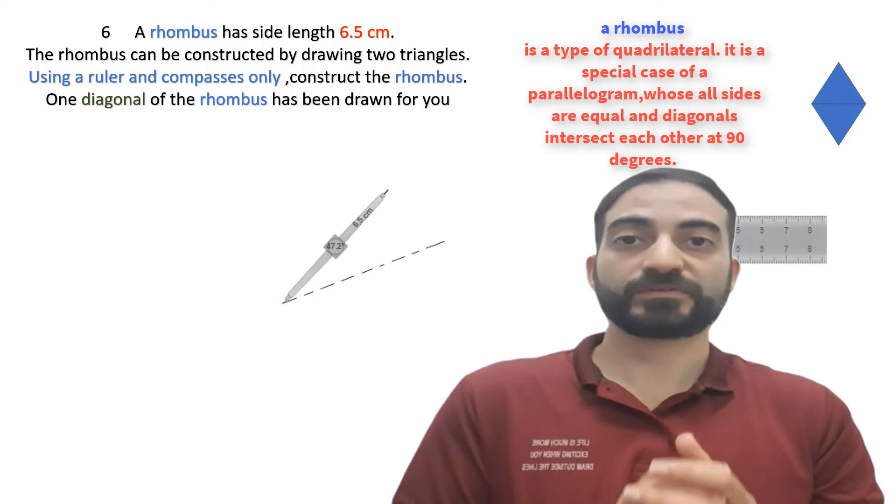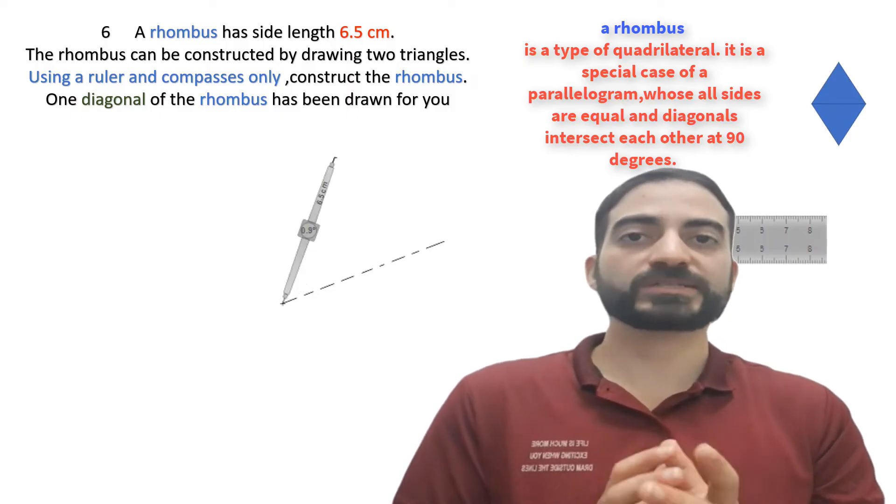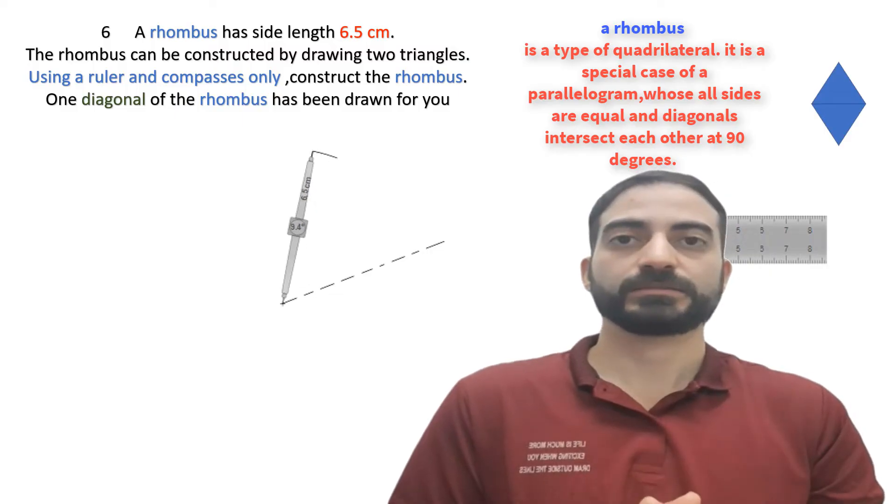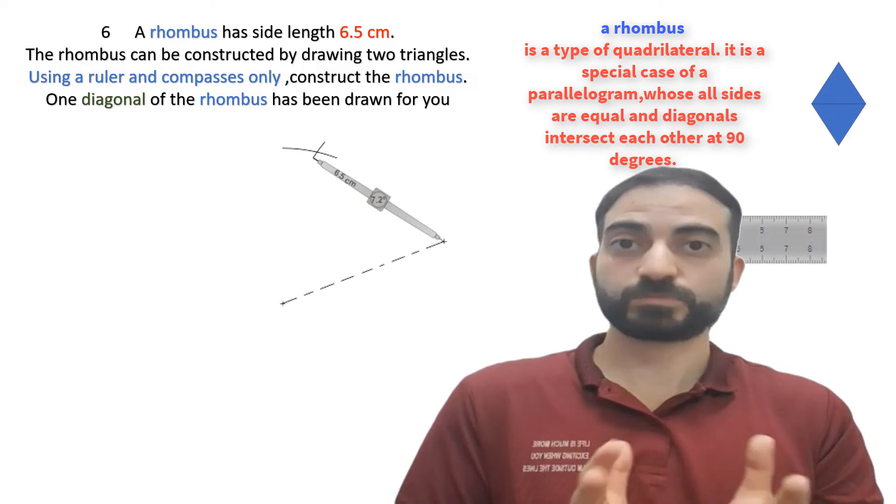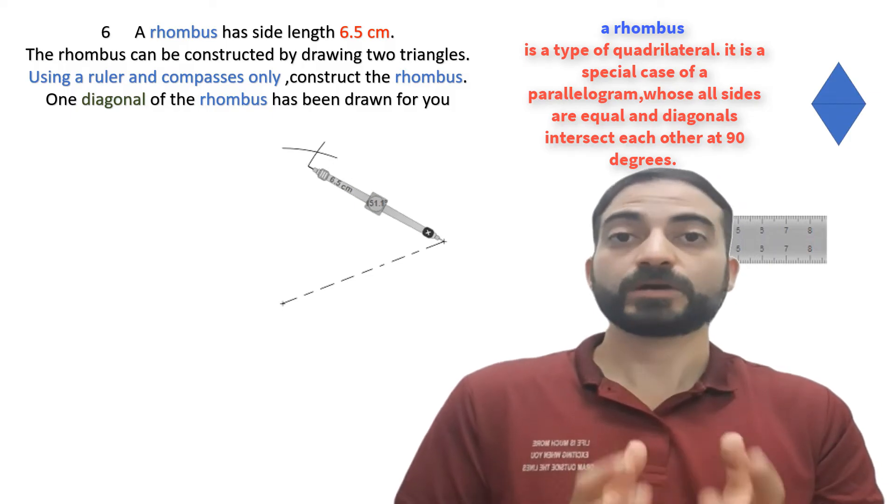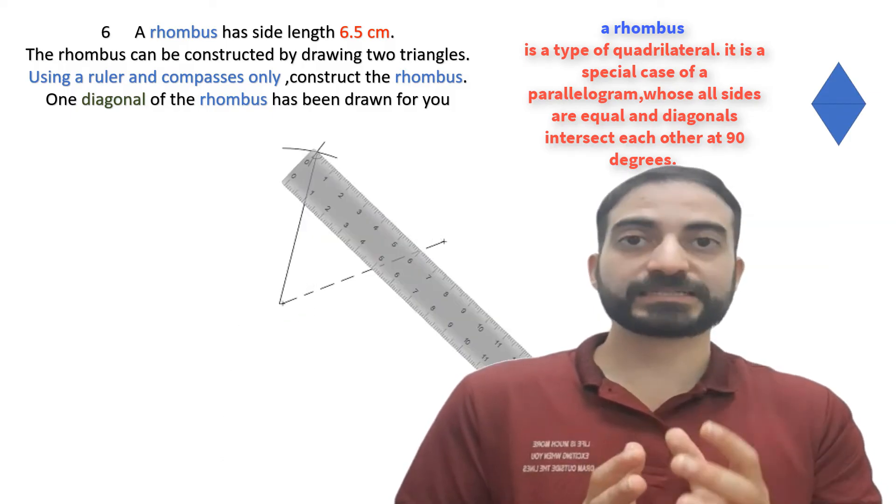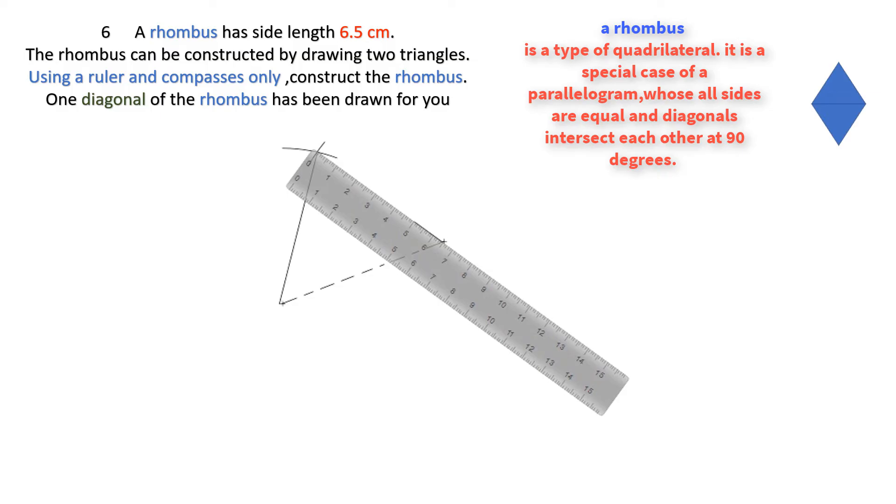Place the needle on this side and draw a small arc. Then move to this side and also draw a small arc. Now we connect the lines together and we get a triangle.